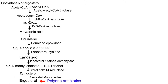Azoles inhibit ergosterol synthesis by inhibiting 14-alpha-lanosterol demethylase. By inhibiting this enzyme, they stop the formation of 4,4-dimethylcholesta-8,12,24-trienol from lanosterol, and hence stop the biosynthesis of ergosterol.